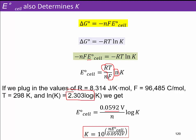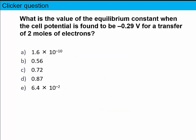Pretty easy connection there to make between K and E. Let's see if you can try one on your own. What is the value of the equilibrium constant when the cell potential is found to be minus 0.29 volts for a transfer of two moles of electrons? Looking at it, we see E is minus 0.29 volts, so we know this is a non-spontaneous reaction. Delta G is going to be positive, and if delta G is positive, then K should be less than 1.